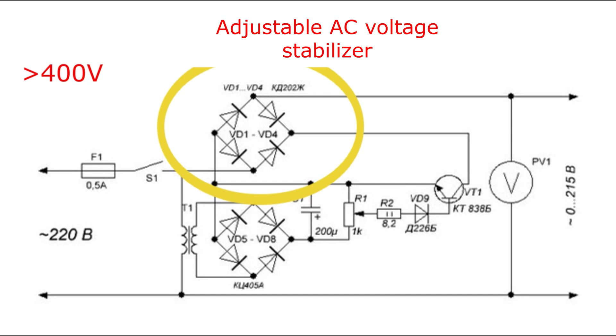Diodes from D1 to D4 must be high power with a reverse voltage of at least 400V. Transistor T1 must be mounted on a radiator.